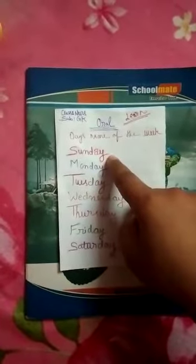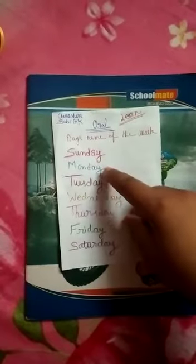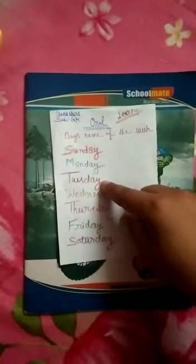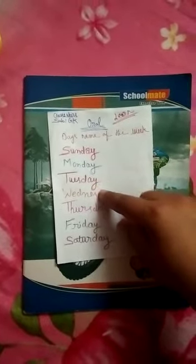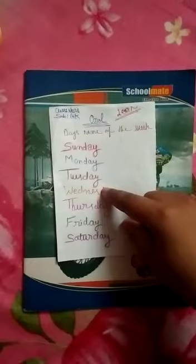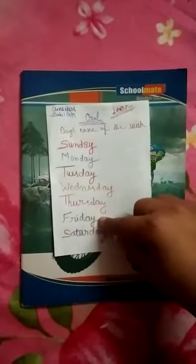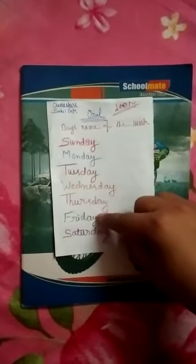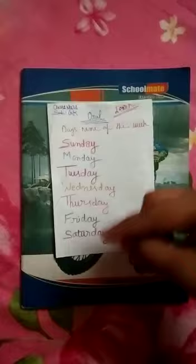So Sunday hota hai, after Sunday Monday, Monday ke after day Tuesday, Tuesday ke after day Wednesday, Wednesday ke after day Thursday, Thursday ke after day Friday, Friday ke after day Saturday.